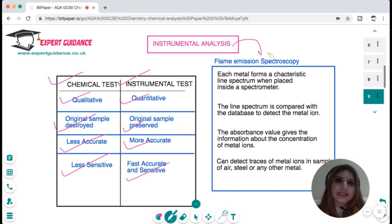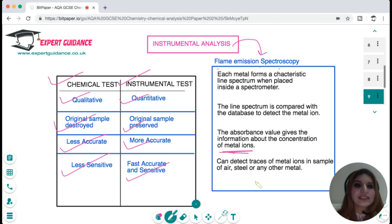One instrumental analysis is flame emission spectroscopy. Each metal forms a characteristic line spectrum when placed inside a spectrometer. We take a sample, place it inside a spectrometer, get the line spectrum, measure the absorbance value that gives us the concentration of the metal ions, then compare it with the database. That can give us information about the traces of metals as well. You should know the advantages of flame emission spectroscopy and what exactly it is.